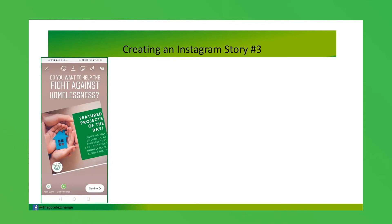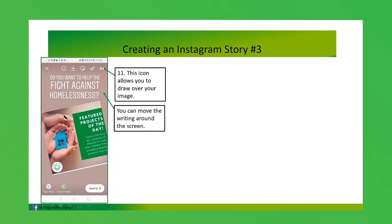I've changed this back to white. As I said, you need to be careful when picking different colors about how that's going to appear against your image. You can also move the writing around the screen by selecting it and dragging it — and over here is the draw icon for your story.